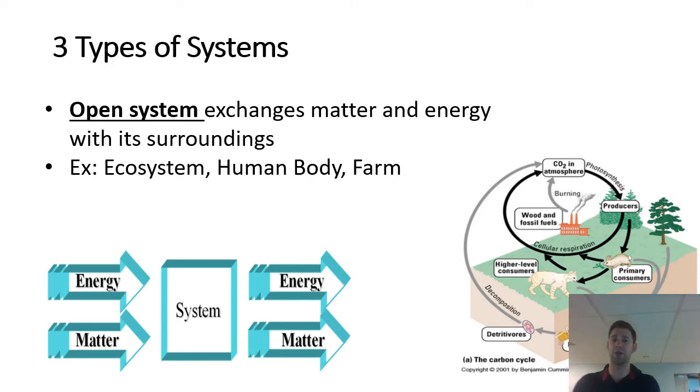So there's three types of systems that you need to know the definitions. You need to know the differences between them. The first and most common system is an open system. This is some sort of system. And again, a system can be a hummingbird, a tree, a classroom, a city, a country. Almost anything can be a system, but something that exchanges matter and energy with its surroundings. The human body, clearly matter and energy enter our body, matter and energy leave our body. So we would be considered an open system. Same with a farm, same with an ecosystem. Soil would be an open system. Again, most things I can think of, most systems I think of would be open.